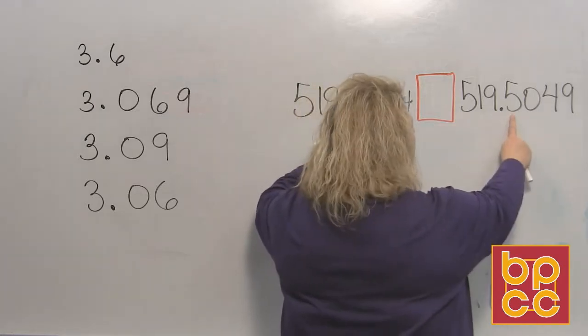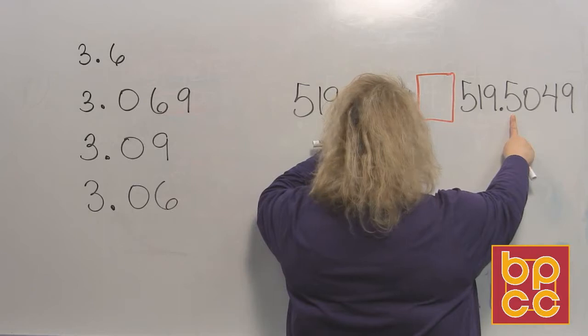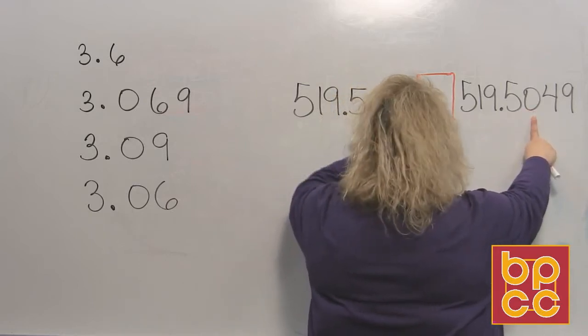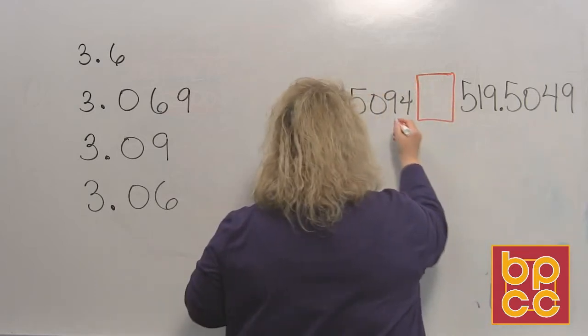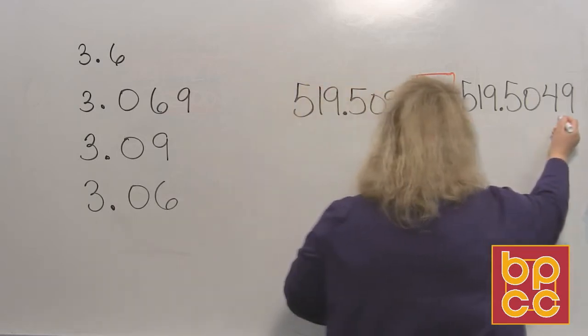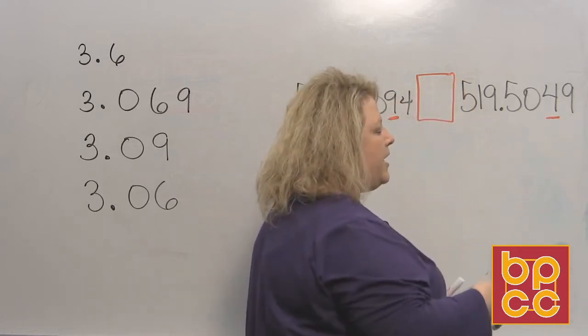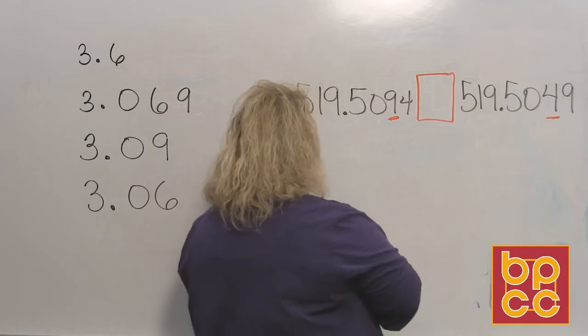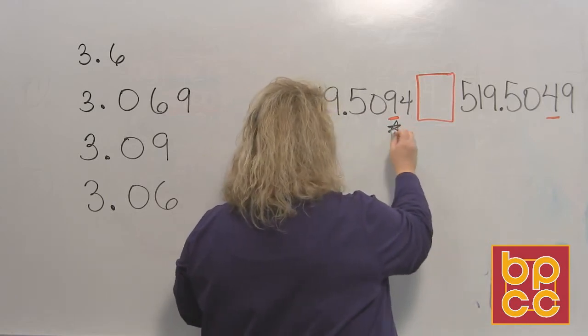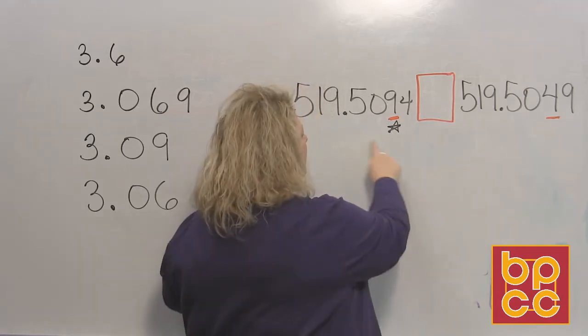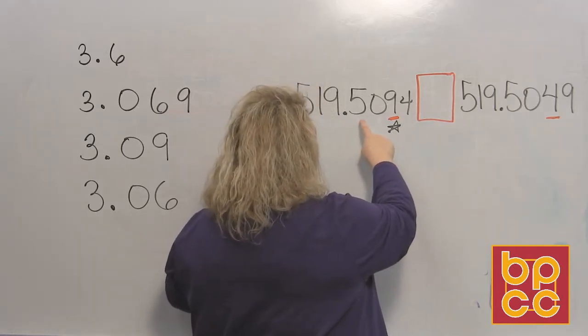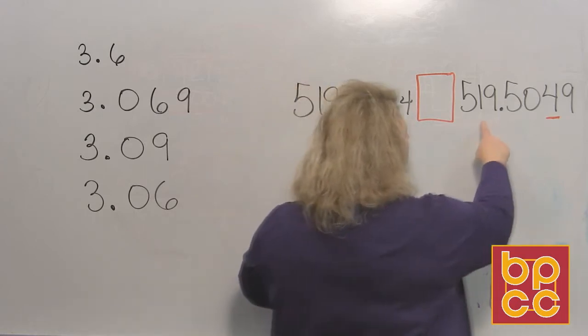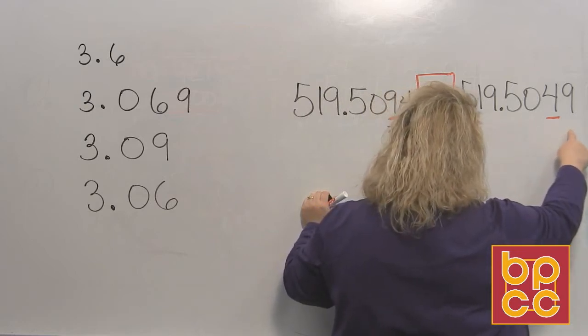My first digit behind the decimal in the tenths place, they're both a five, so keep going. The second digit in the hundredths place is a zero. Keep going. The third digit that we come to on the left is a nine. On the right is a four. At this point, because we now have some that are different, we can say which one's bigger. Well, the nine is bigger than the four, so that means the number on the left, 519.5094, is greater than 519.5049.